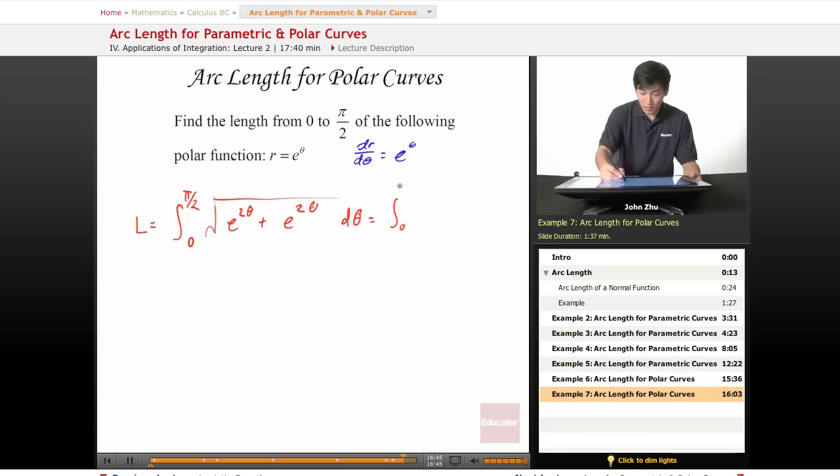And we can combine terms here: 0 to pi over 2, square root of 2, e to the 2 theta, d theta.